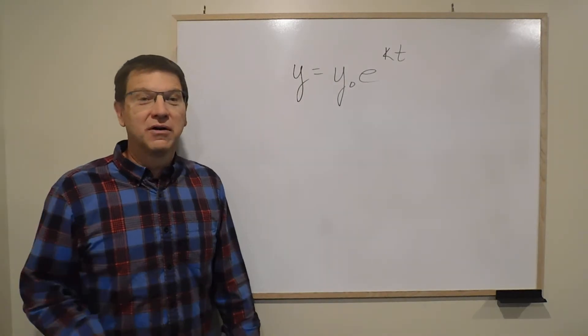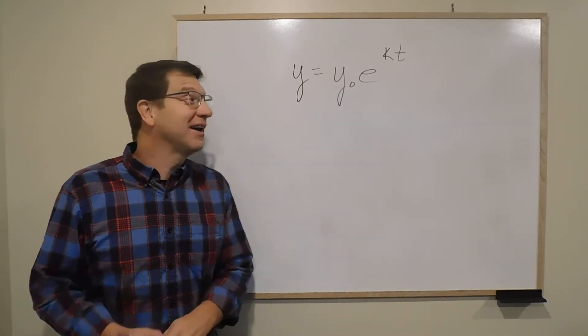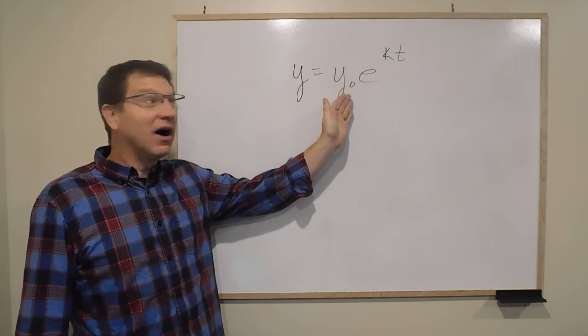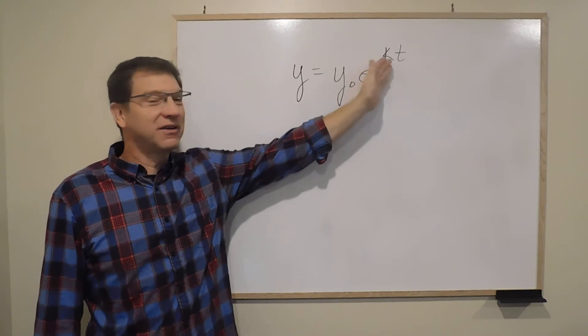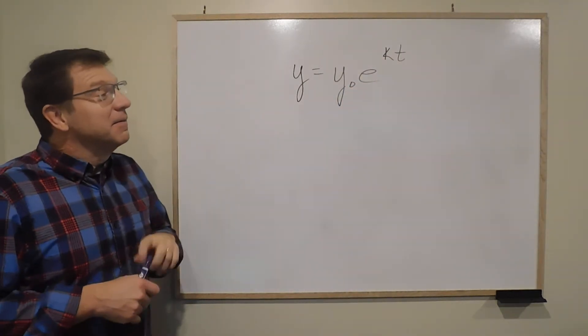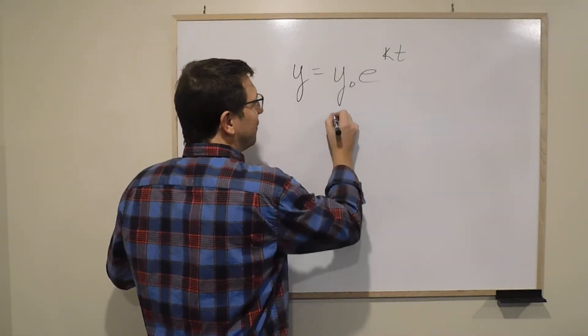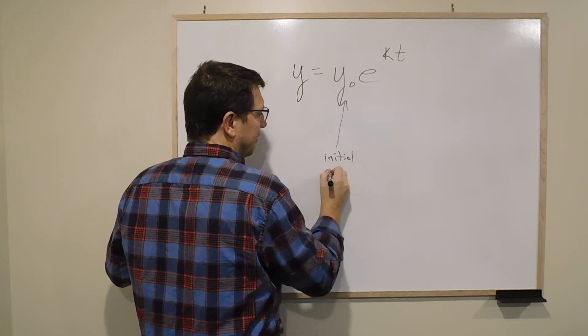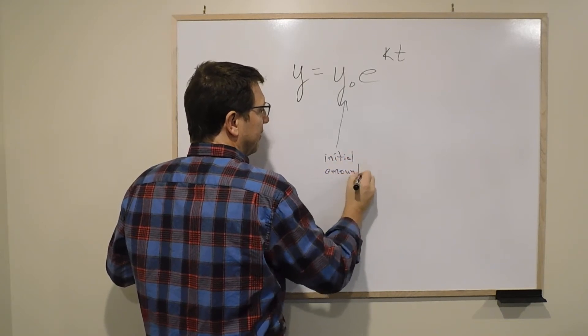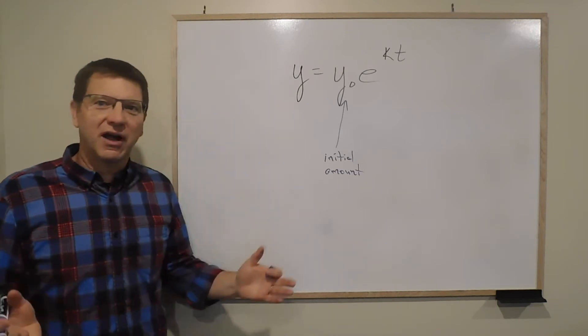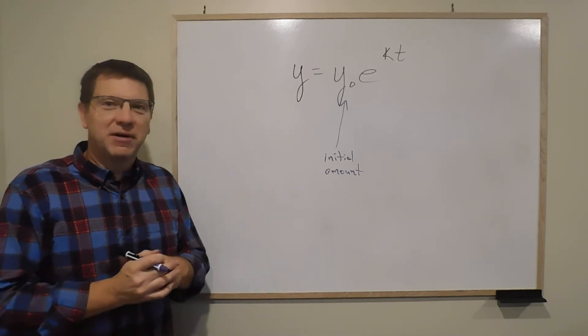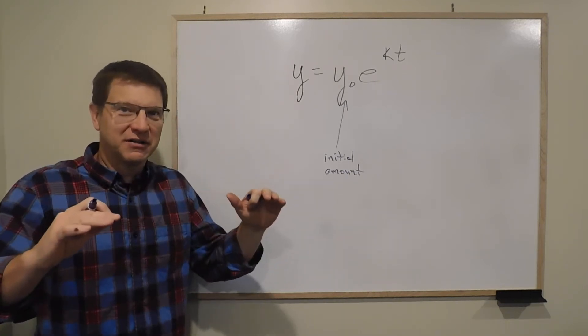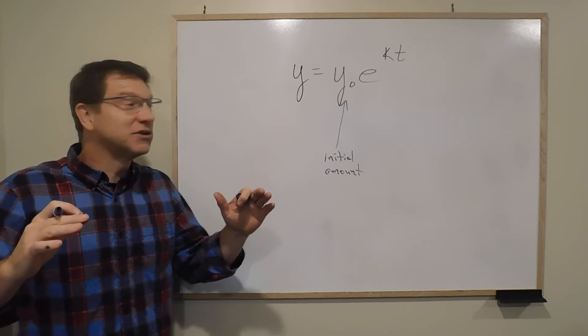A couple of key things. This looks like a lot of crazy letters. Y₀, which is Y-not, we call it. You've got this E, you've got this K, you've got this T. This here is your initial amount. So when you start something, when you start anything, it's the initial amount. So it might be the number of viruses in a Petri dish. You may start having an initial amount. So time would be zero just starting.